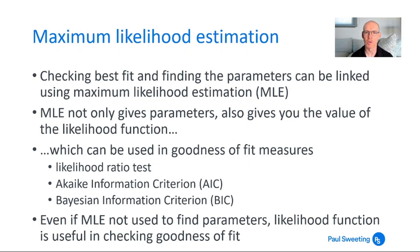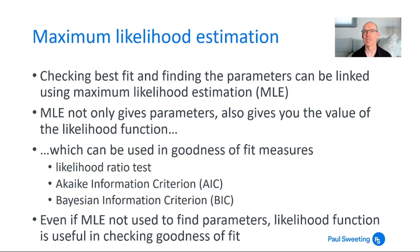You can use the likelihood function for things like likelihood ratio tests, the Akaike information criterion (AIC), and the Bayesian information criterion — to look at whether what you come up with is the best fit, the best structure, and the best parameters.